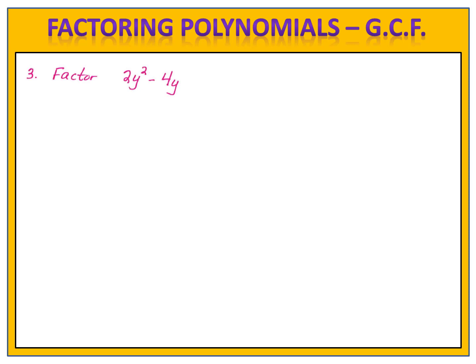In exercise 3, we want to factor 2y squared minus 4y. This exercise is for you to try. Please pause the video here and factor this polynomial. We begin by copying the problem down and then looking at both of the terms. We first look at the numbers — we have a 2 and a 4. The largest number that divides 2 and 4 evenly is simply the number 2. So we write that out front, and then divide both terms by 2. 2y squared divided by 2 is simply 1y squared, and 4y divided by 2 is minus 2y.